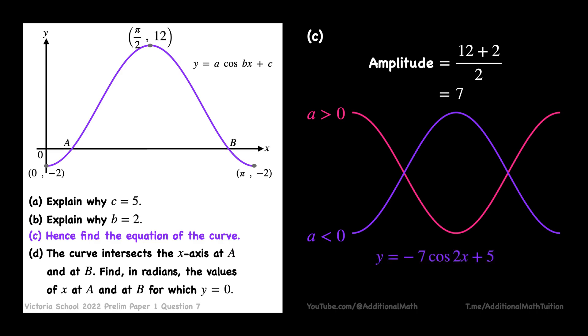Thus, we can conclude that a = -7 and the equation of the curve is y = -7 cos(2x) + 5.